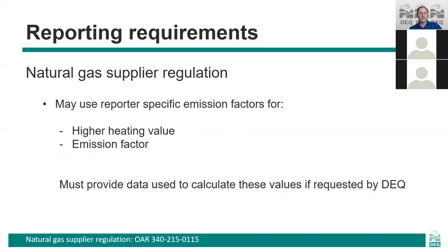The greenhouse gas emissions are calculated by DEQ using quantification methodologies in Title 40 Part 98 of the Code of Federal Regulations. We generally use default values for things like higher heating values and the emission factors for different greenhouse gases, but you can also use developed values if you choose. If you do, DEQ may request the data used to calculate those reporter-specific values as part of our auditing process.